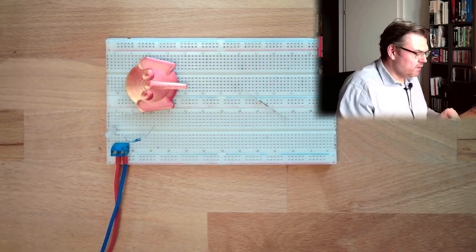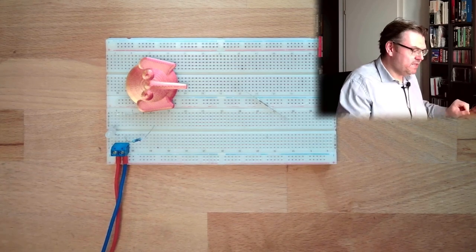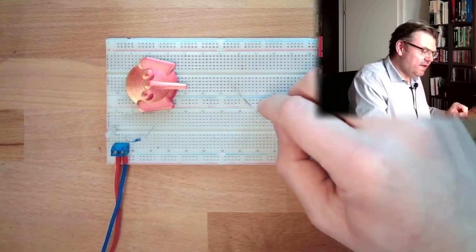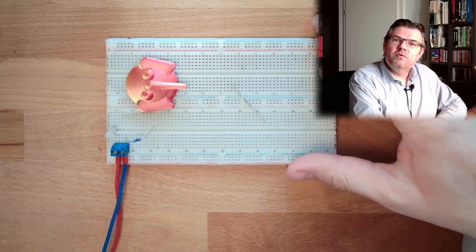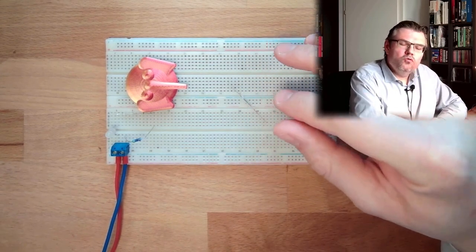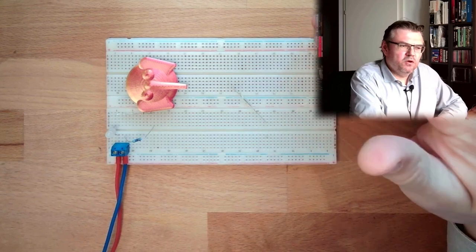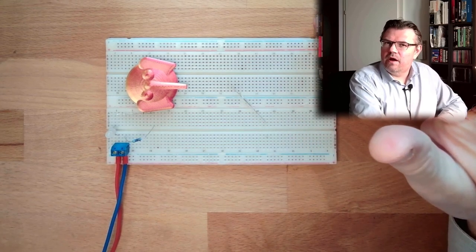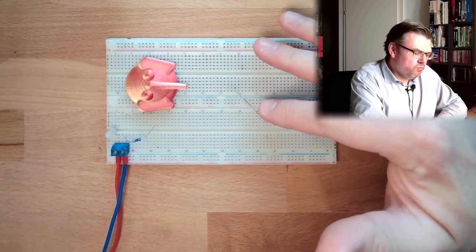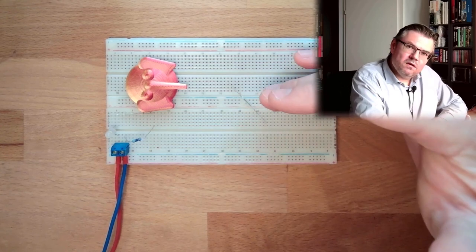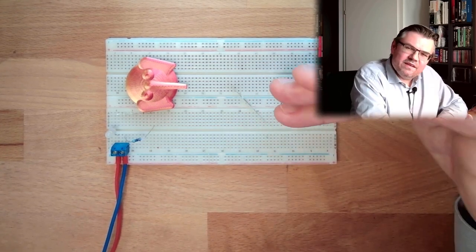So this is how a reed switch basically works. Why is it in glass? Yes, because you can use such reed switches also in some explosive atmosphere. So if there is a spark, it will stay inside the glass tube.